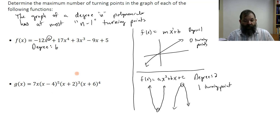And so then the maximum number of turning points is 6 minus 1, which is 5.